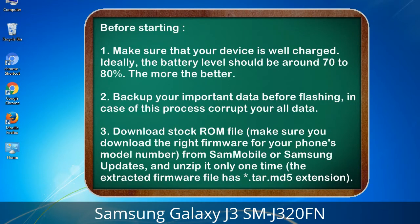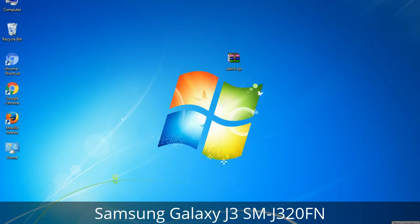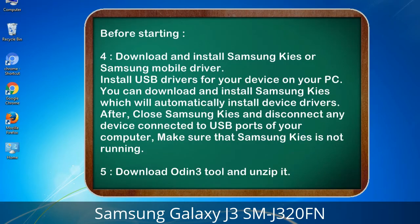Before starting: 1. Make sure that your device is well charged. Ideally, the battery level should be around 70 to 80% — the more the better. 2. Back up your important data before flashing, in case this process corrupts your data. 3. Download the stock ROM file. Make sure you download the right firmware for your phone's model number from Sammobile or Samsung Updates, and unzip it only one time. The extracted firmware file has a .tar.md5 extension.